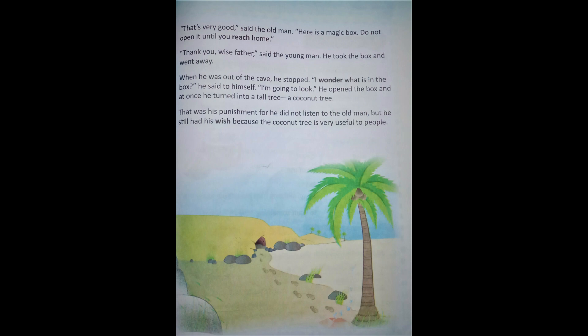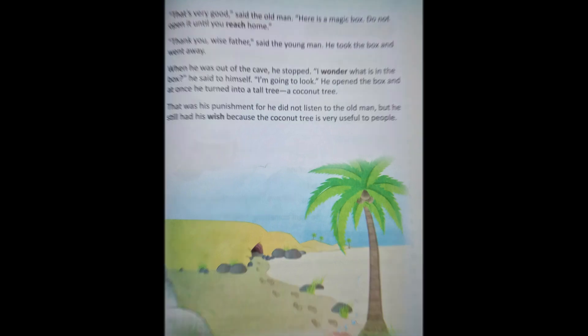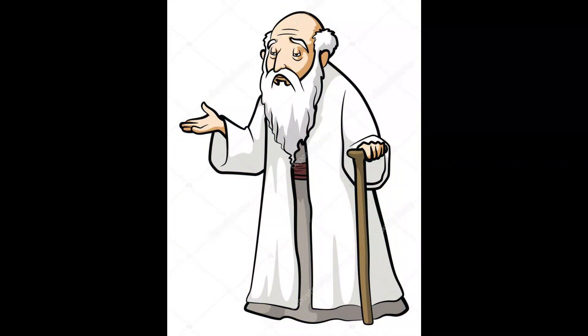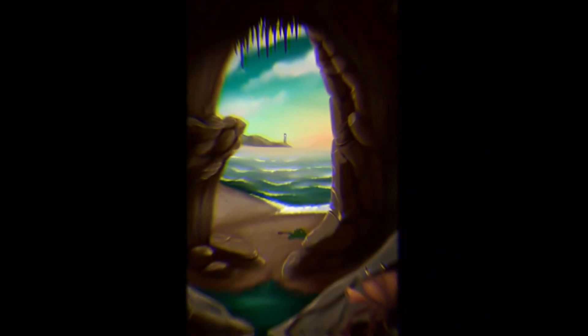So, children, the story we read just now is a Malaysian story of an old man. He was very, very old man. This old man was very wise and he knew many things. He did not have a house like us. He lived in a cave near the sea.